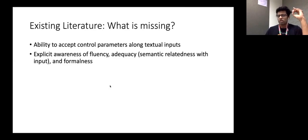So existing literature, what are they missing? Typically, what we have seen is that the works do not have the ability to accept control parameters, most of them, and they are not extremely aware of different artifacts that are related to controllable text formalization. For example, fluency, one has to ensure that the fluency of the output text is maintained, as well as it is related semantically with the input, and it is more formal. So these kinds of objectives, existing systems are not trained with such objectives.